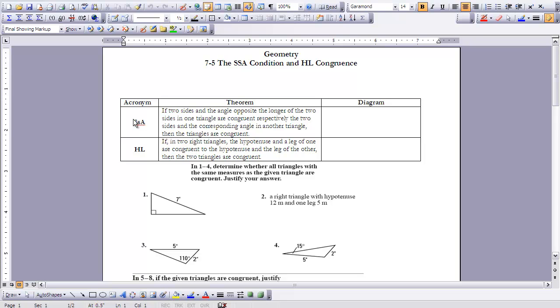And then the other theorem is that if in two right triangles, the hypotenuse and a leg of one are congruent to the hypotenuse and the leg of the other, then the two triangles are congruent.